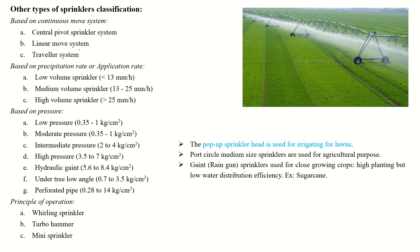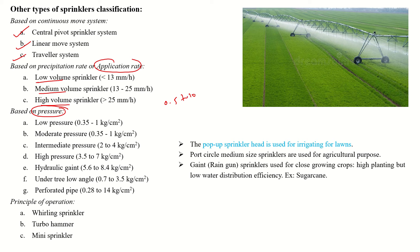Other classifications of sprinkler systems based on continuous movement include central pivot, linear move, and traveller systems. Sprinklers are also classified by application or precipitation rate into low volume, medium volume, and high volume types, based on operating pressures. The minimum operating pressure for sprinklers ranges from 0.5 to 10 kg per centimeter square.